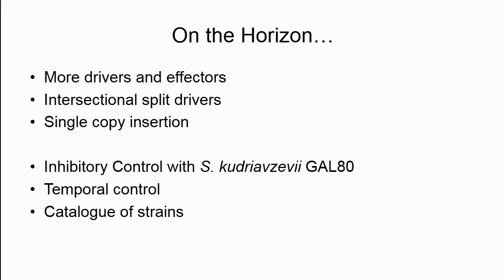Looking forward, we're continuing to build and would love to hear from the community about what you want. We have promising preliminary results with intersectional control using split drivers — so control is now under two promoters instead of one — and good results with single-copy insertion. We're hoping to combine that with a transposase or CRISPR for more sophisticated driver construction or gene trap techniques. Further down the road: inhibitory control using GAL-80, temporal control schemes, and light-activated domains. We're also working on a catalog so the community can browse and order strains.